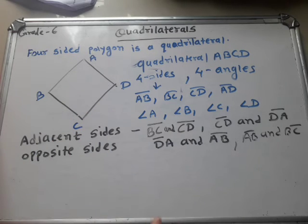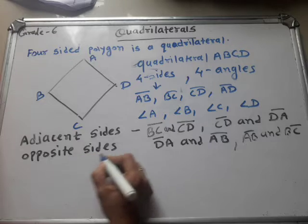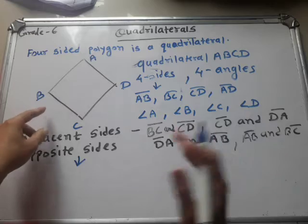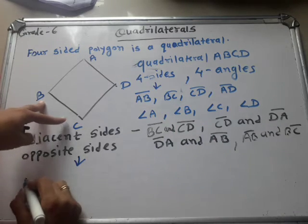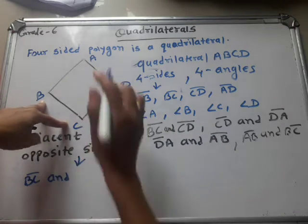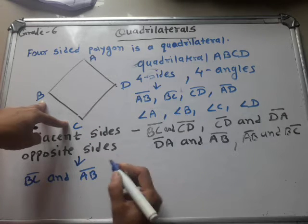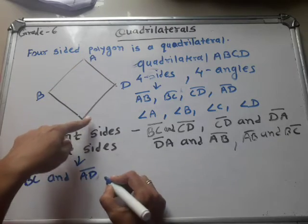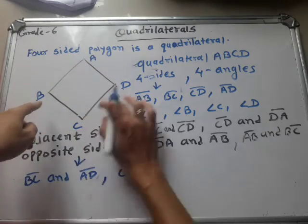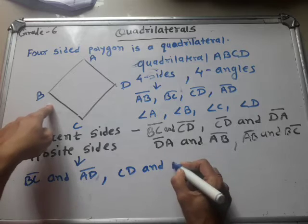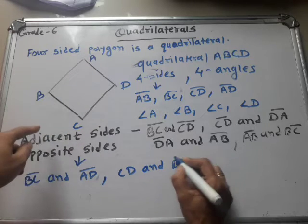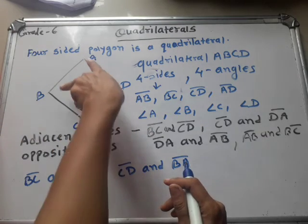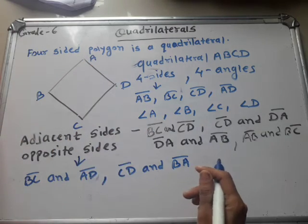Now opposite sides — which are the opposite sides? Opposite means the side directly across from it. So BC and AD are two opposite sides. Then CD and AB — these are again two opposite sides.